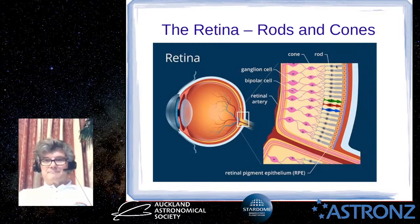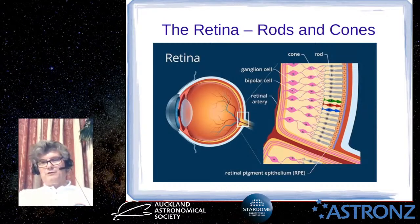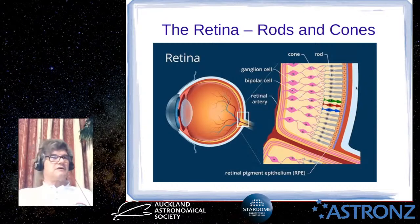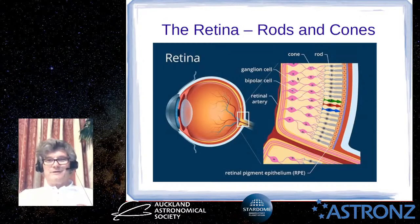Not all animals are like this — squid and octopus have their blood supply and nerves on what you'd think is the correct side. But all vertebrates — humans, dogs, cats — have their retina arranged the other way around.